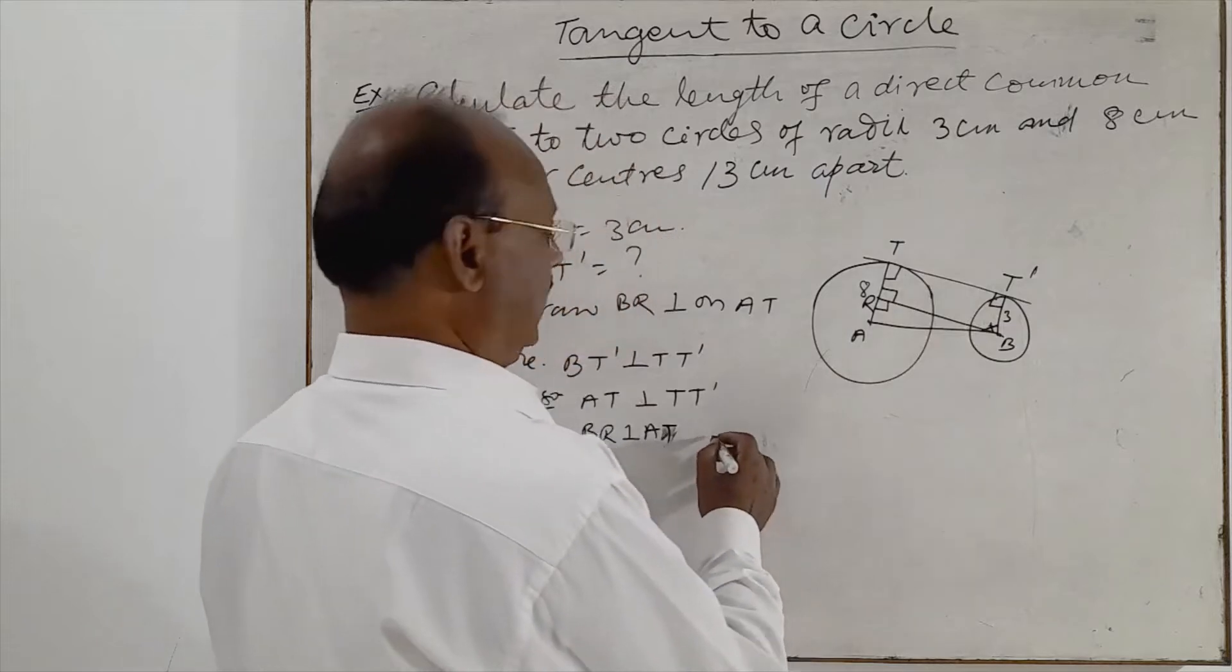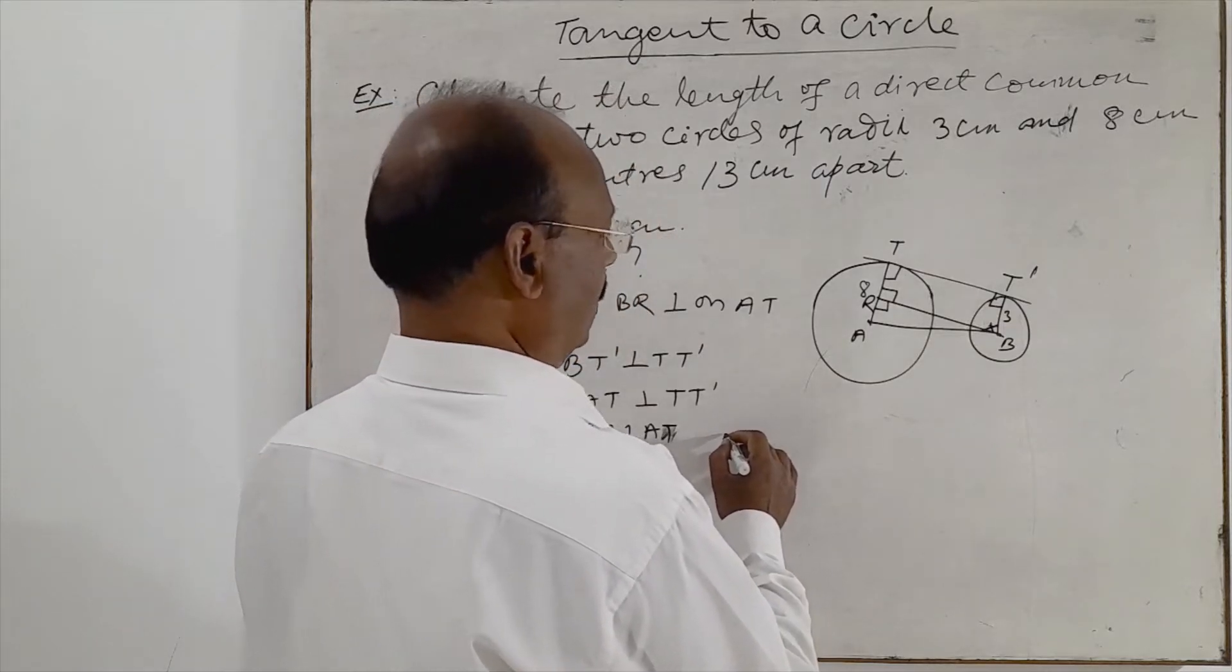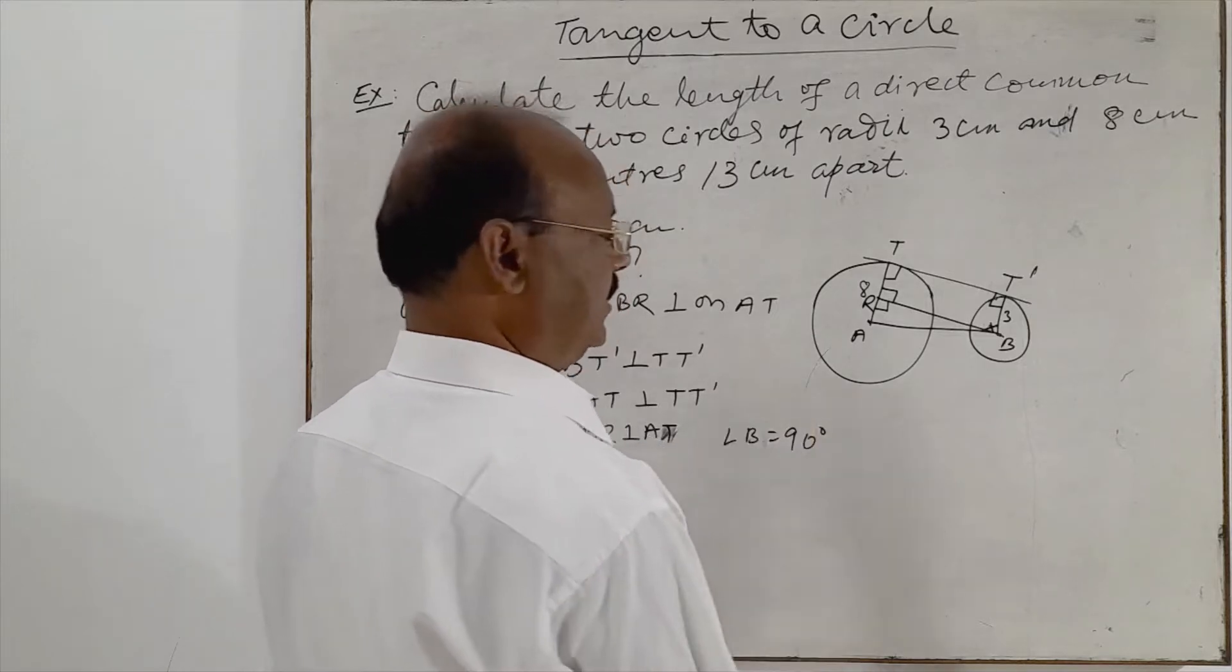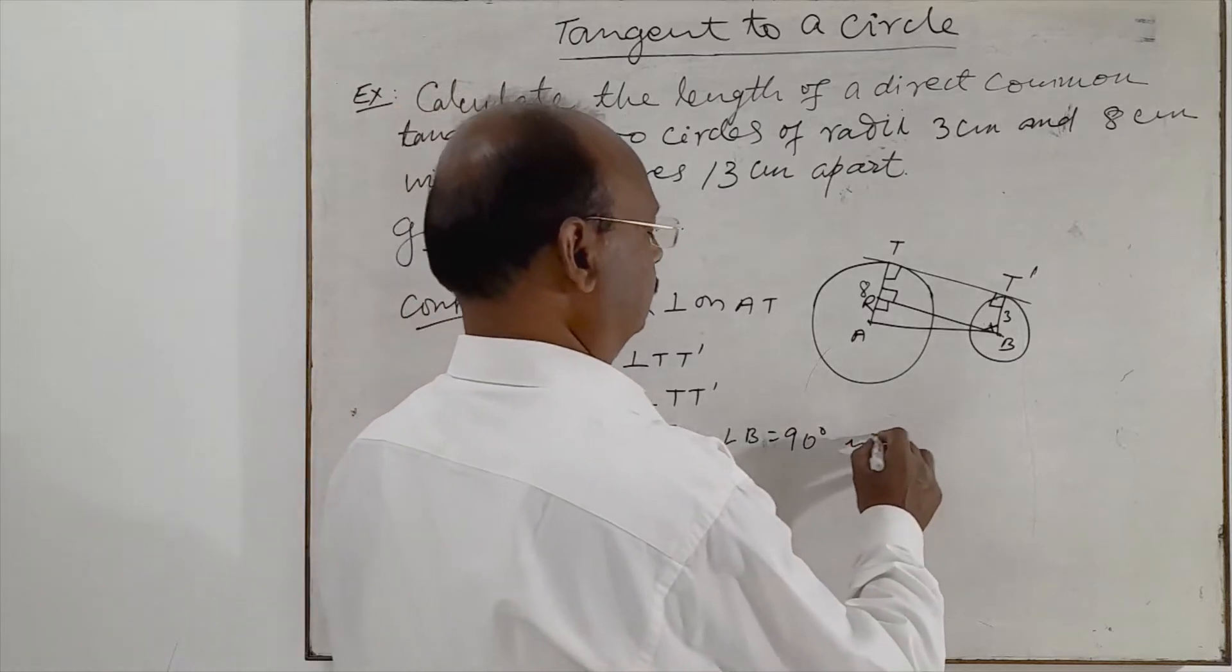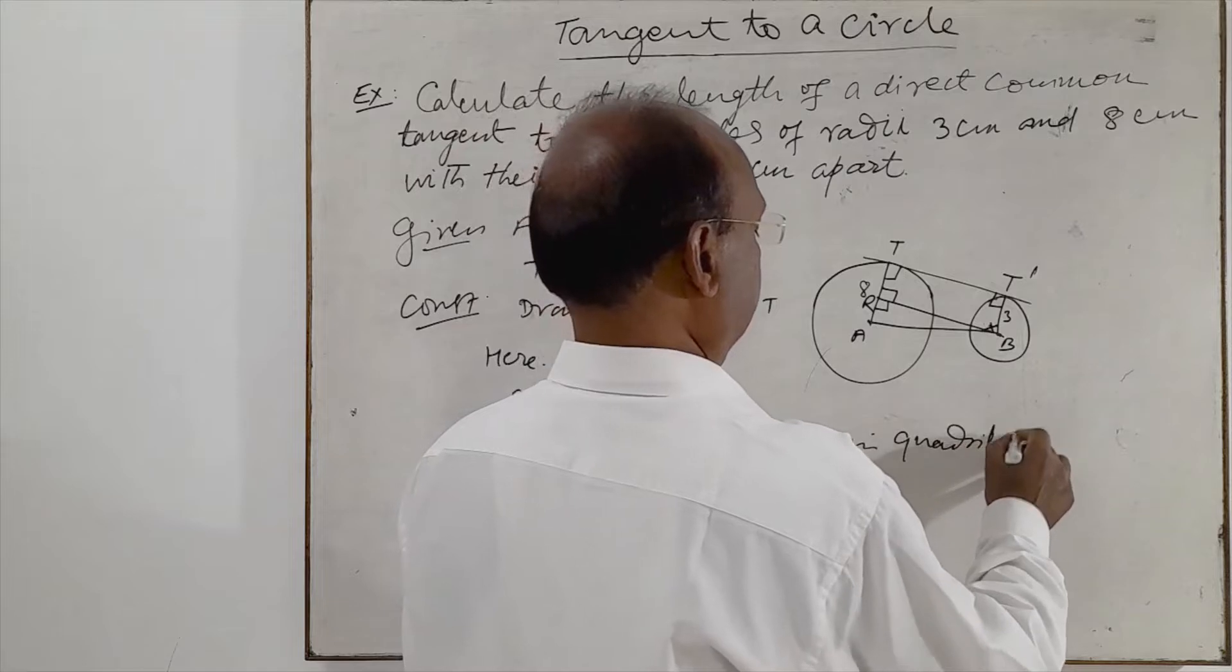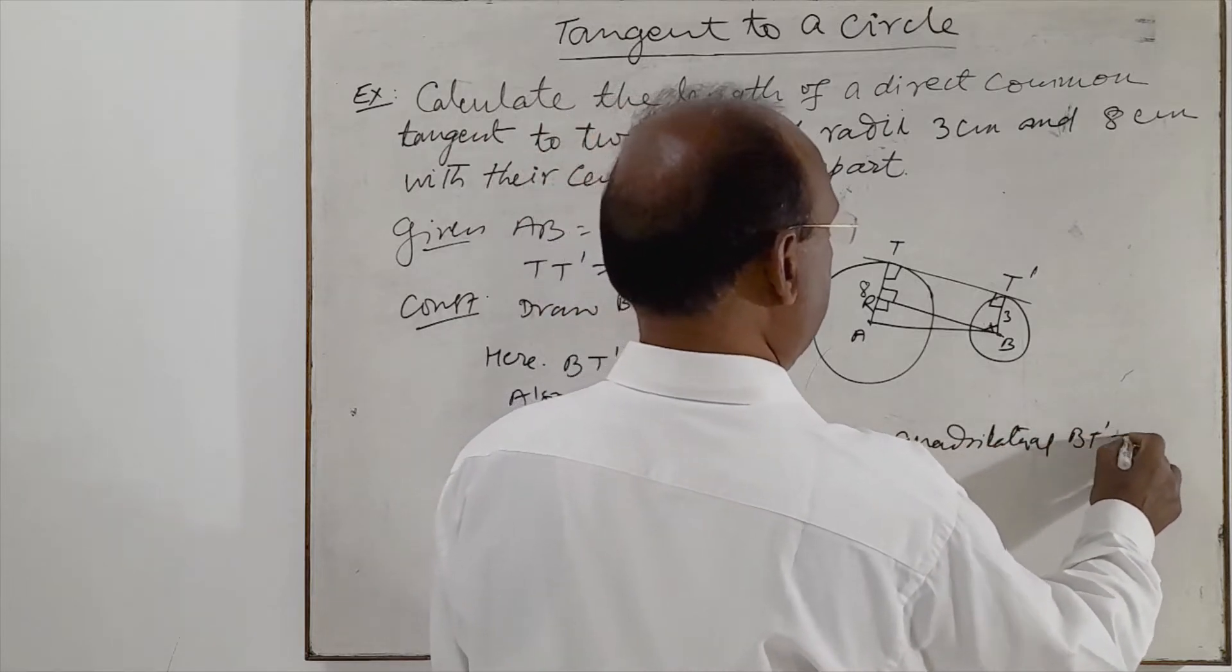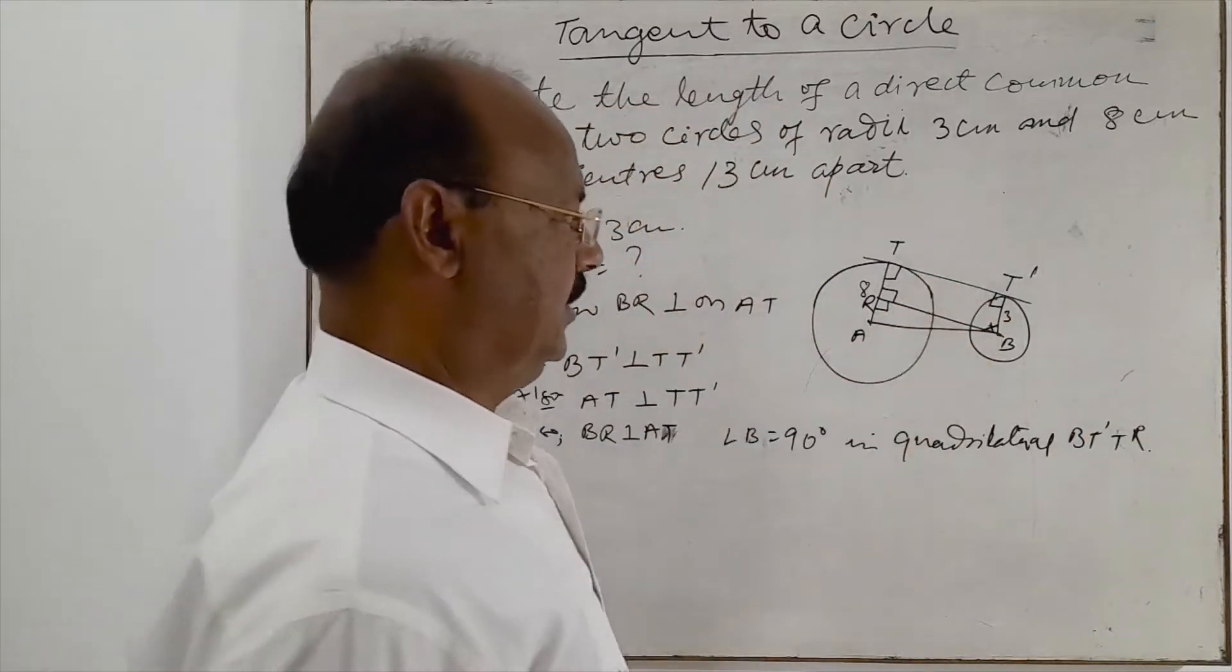So we can write like this. Here angle B is equal to 90 degrees in quadrilateral BTTAR because three angles are already 90 degrees.